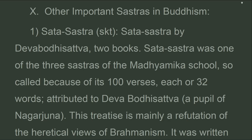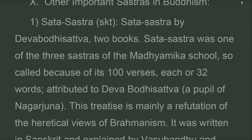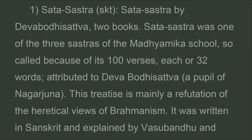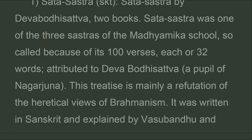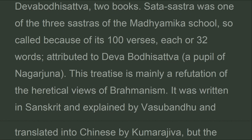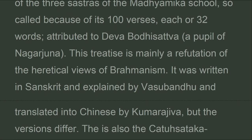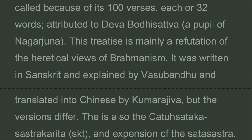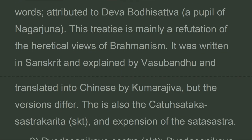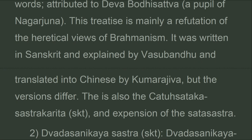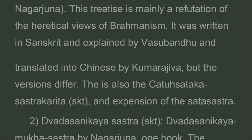Important sastras in Buddhism. First, the Sata Sastra (Skt.), by Deva Bodhisattva, in two books. The Sata Sastra was one of the three sastras of the Madhyamika school, so called because of its 100 verses of 32 words each, attributed to Deva Bodhisattva, a pupil of Nagarjuna. This treatise is mainly a refutation of the heretical views of Brahmanism. It was written in Sanskrit, explained by Vasubandhu, and translated into Chinese by Kumarajiva, though the versions differ.